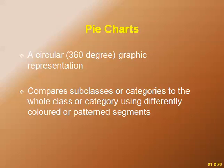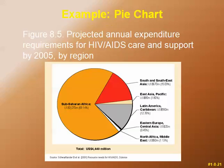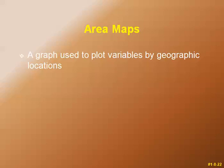Pie charts are a circular, 360-degree graphical representation of data. They compare subclasses or categories to the whole class using differently colored or patterned segments. An example shows projected annual expenditure requirements for HIV/AIDS care and support by 2005 by region. Sub-Saharan Africa contributes the maximum share because HIV prevalence is highest in that region.